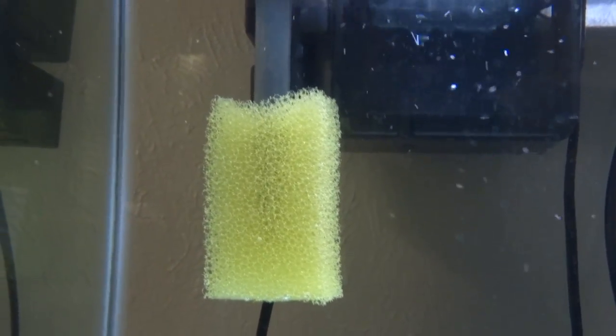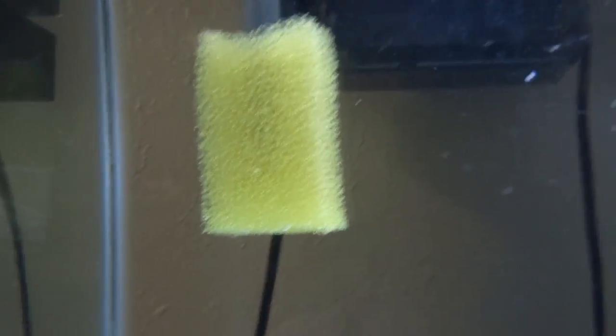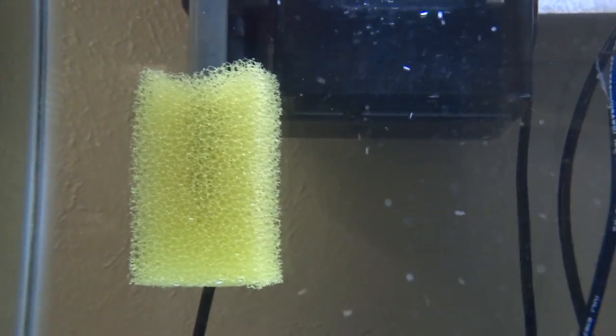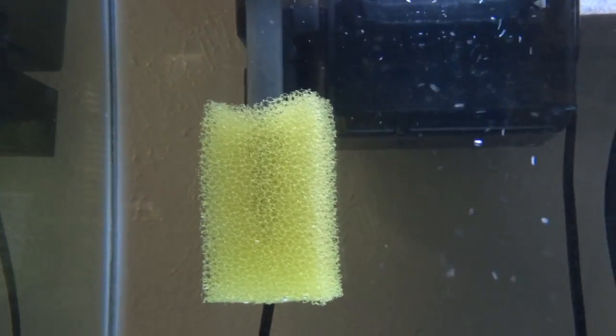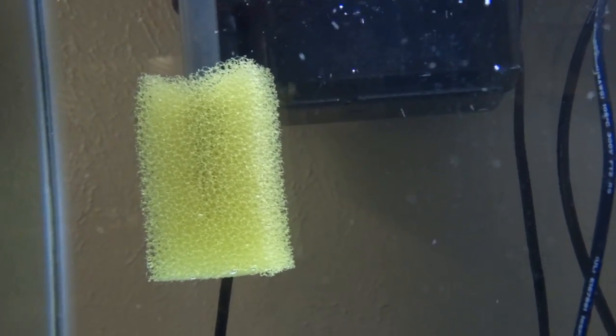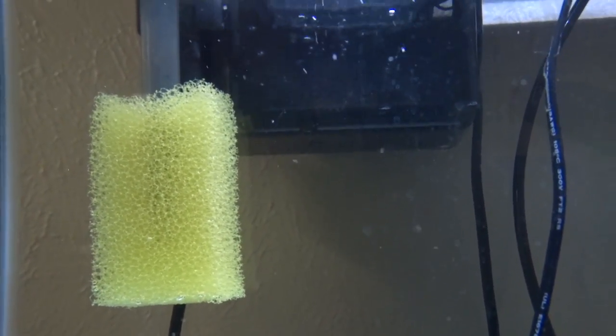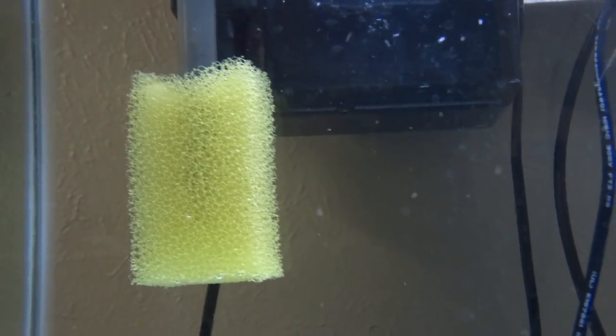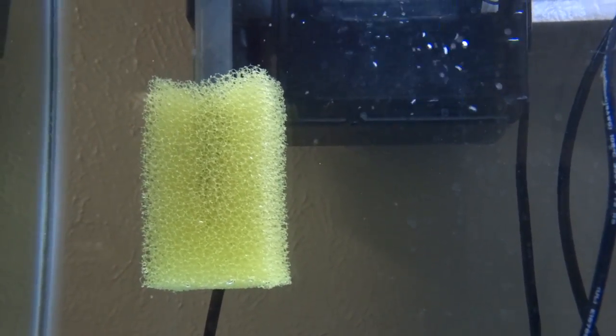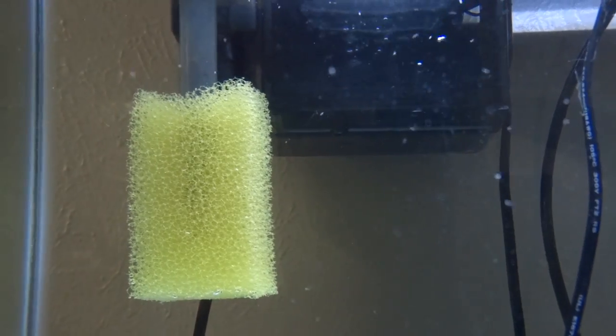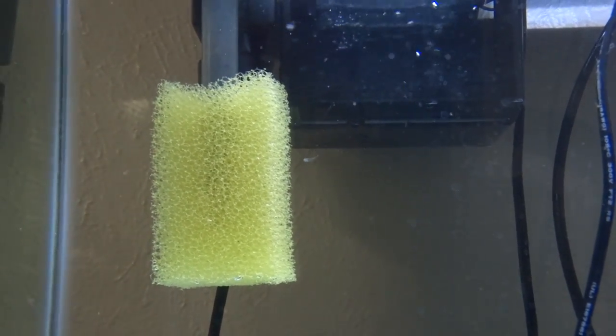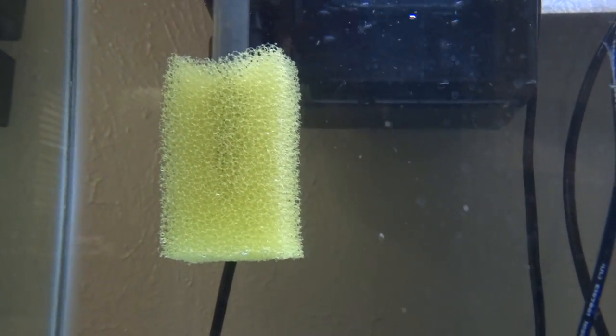Alright, so I went ahead and baby proofed my hang on the back filter. I'm not sure if this will work 100%, but it hasn't worked for me in the past. Maybe I did something wrong back then so I'm going to give it another go. If I see that babies are sticking to it then I'm going to have to turn off the filter again. The reason why I want this on is because I want to minimize water changes. I mean I'll still do them every day, but in case I have to work a lot or get really busy and have to miss a day or two, I can have my hang on the back filter as backup so that they survive a little bit longer.